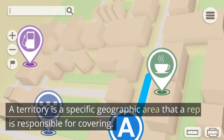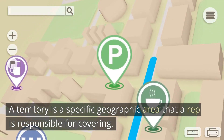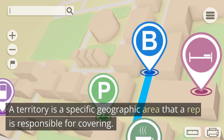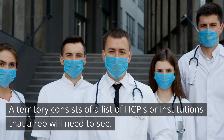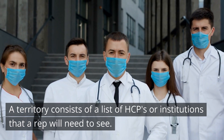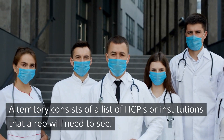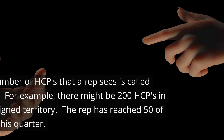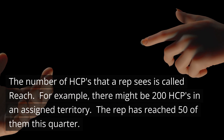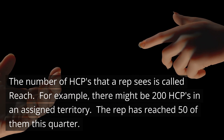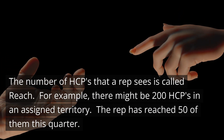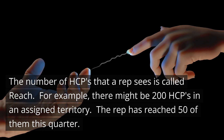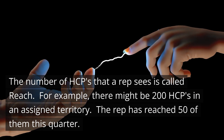A territory is a specific geographic area that a rep is responsible for covering. A territory consists of a list of HCPs or institutions that a rep will need to see. The number of HCPs that a rep sees is called reach. For example, there might be 200 HCPs in an assigned territory, and the rep has reached 50 of them this quarter.